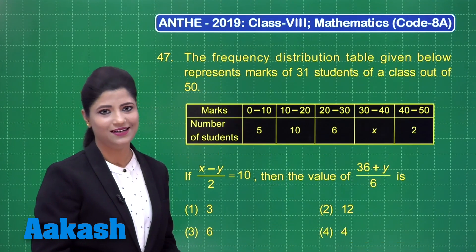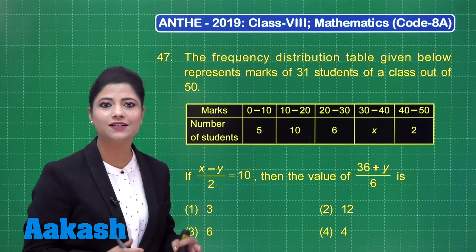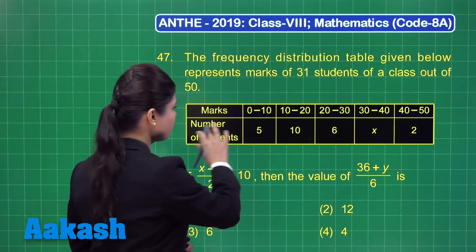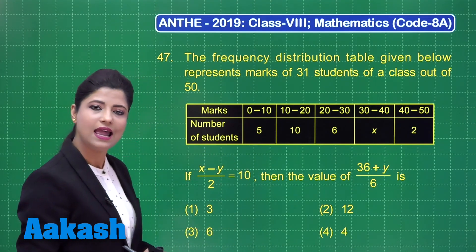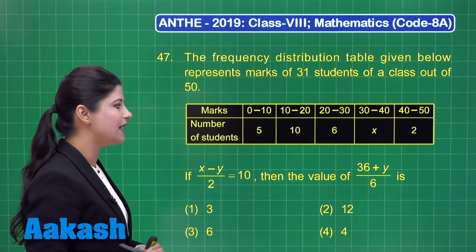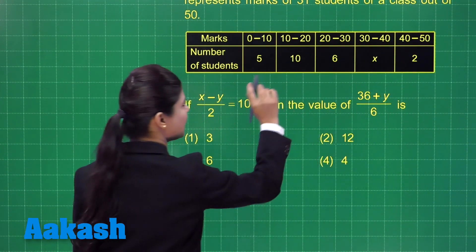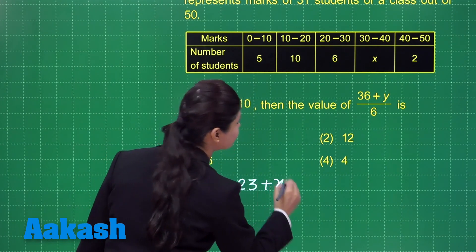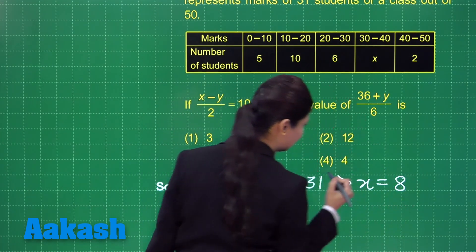The next question states that a frequency distribution table represents marks of 31 students out of 50. The sum of all frequencies must equal 31. The given frequencies are 5, 10, 6, X, and 2. Their sum is 23 + X = 31, which gives X = 8.